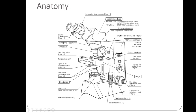The stage is where you place the slide you're looking at. There's a spring contraption that locks the microscope slide in place so you can move it around. If you want to move the slide to center what you're looking at or view a different part, you use the two XY adjustment knobs — one moves the stage right to left and the other moves it front to back.